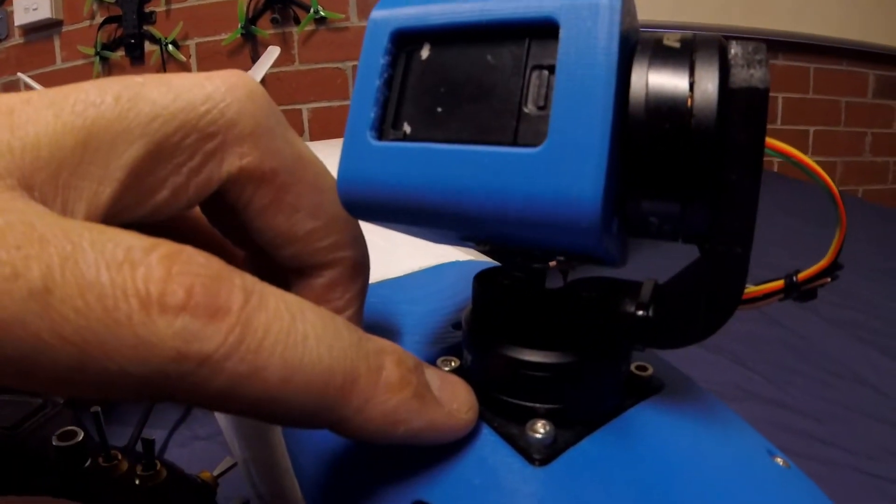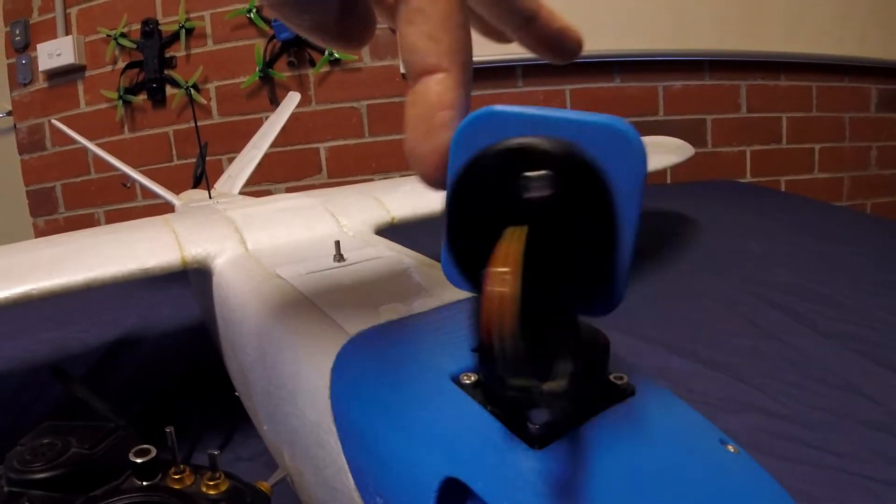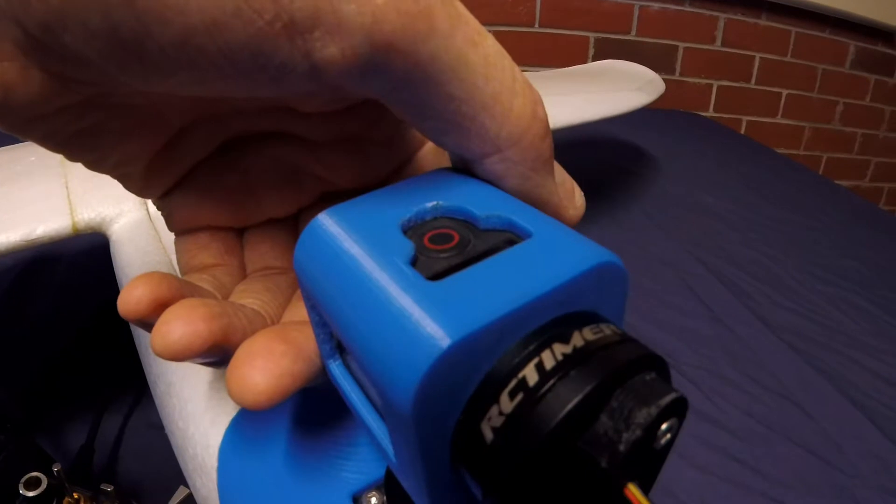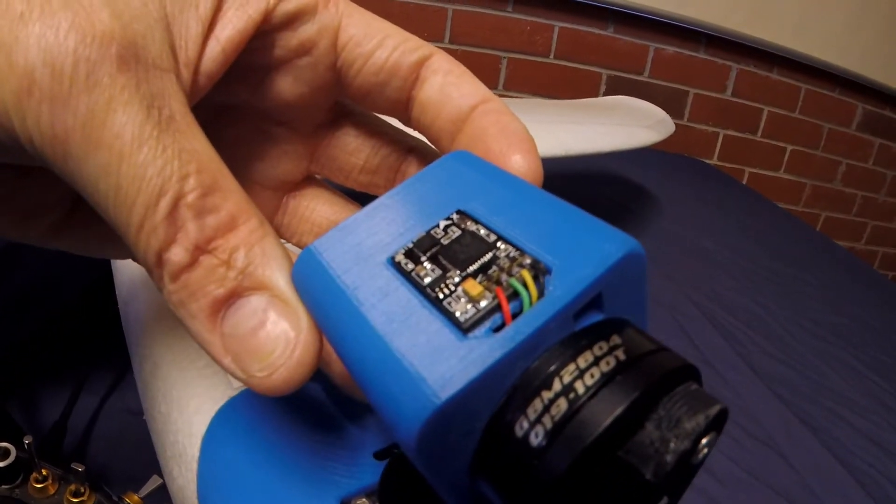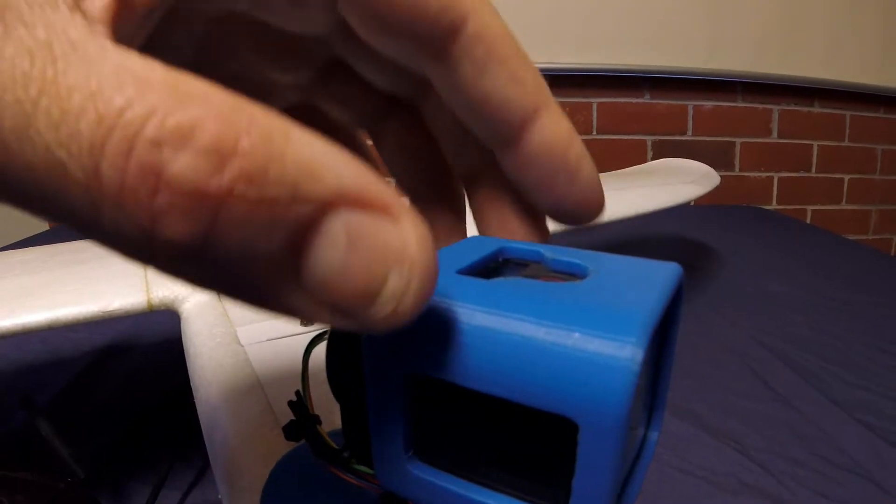Underneath the pan motor there's a slip ring and that allows the gimbal to twist around and do a full 360. The gimbal motors are RC timer GBM2804s. They're the gimbal motors with the hollow shaft. And the gimbal pieces are 3D printed.